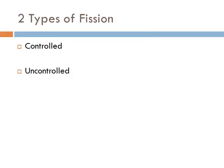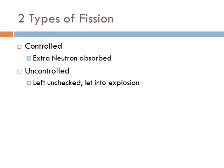We use two terms to describe fission reactions: controlled and uncontrolled. Controlled fission requires absorbing extra neutrons, because each time you split a uranium-235 or plutonium-239 atom, you get 3 extra neutrons. To maintain only one additional reaction, you need to absorb some of those neutrons. Uncontrolled means you leave it unchecked, so for every split you get more splits, and that's when we get an explosion.